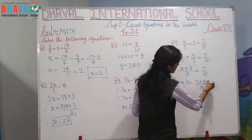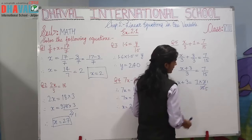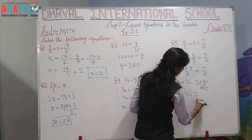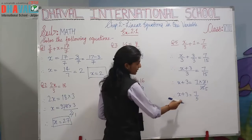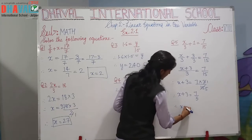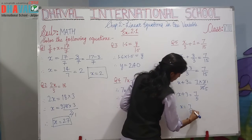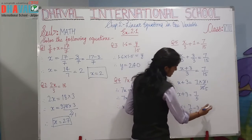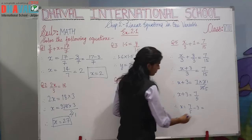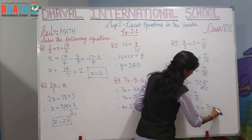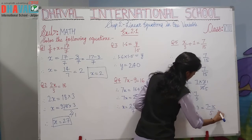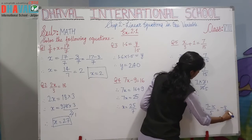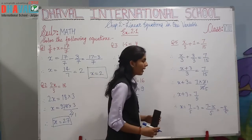Continuing from x + 3 = 7/5, we subtract 3 from both sides: x = 7/5 − 3. Taking LCM of 5, we get x = 7/5 − 15/5 = −8/5. This is the answer for x.